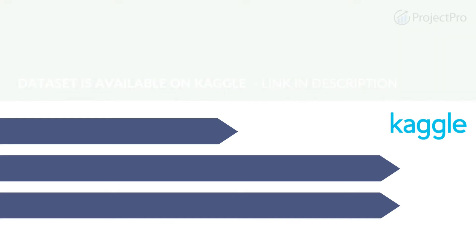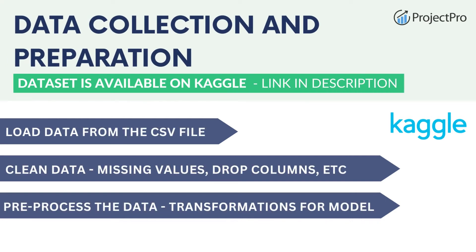The first step in our project was to collect and prepare the data. We gathered a large dataset of insurer claims, along with information on the policyholders and the claims themselves, including data on the type of policy, the policyholder's age, location, and details of the claim. Once we had the raw data, we cleaned and preprocessed it — removing missing or incorrect values and transforming the data into a format usable by our machine learning model.